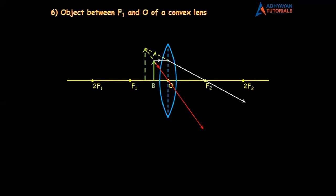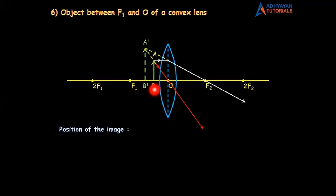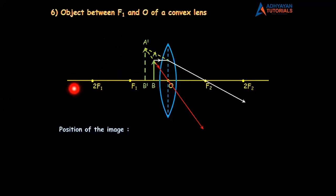The point of intersection is above the principal axis, and that's why the arrow is up and the image is also named accordingly — A dash at the top, B dash below. Position of the image: when you draw this diagram, some of you will get the image between F1 and O, some will get it above F1. You can get the image anywhere — everything is correct. But the image should be on the left side.